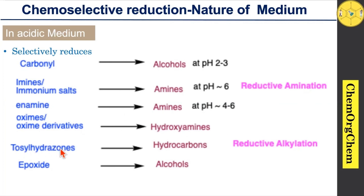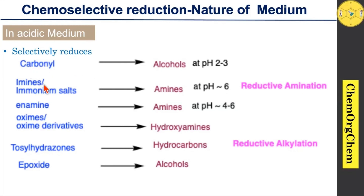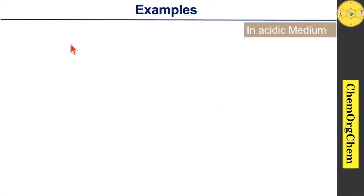Tosyl hydrazones can be converted into hydrocarbons — this method is called reductive alkylation, and it is one of the most important methods. Similarly, epoxides can also be opened by sodium cyanoborohydride to provide corresponding alcohols. In this video, we are going to focus on carbonyl as well as imine or iminium salt reductions. Remember that all these reactions should be carried out in acidic medium.